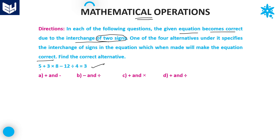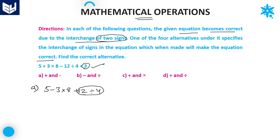The given equation is: 5 + 3 × 8 - 12 ÷ 4 = 3. First let's go for option A. If we take option A, plus and minus are interchanged, so the equation becomes: 5 - 3 × 8 + 12 ÷ 4. Let's check whether this equals 3.